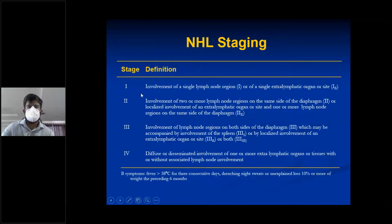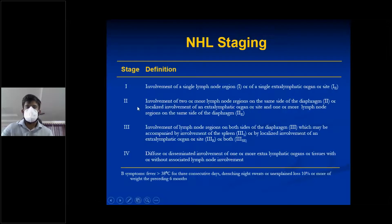NHL staging is the same as for Hodgkin's lymphoma. Stage 1 is involvement of a single lymph node region or an extra-lymphatic site. Stage 2 is involvement of two or more lymph node regions on the same side of the diaphragm, or one extra-lymphatic site plus one or more lymph nodes on the same side. B symptoms include fever greater than 38°C for three consecutive days, drenching night sweats, or unexplained weight loss in the preceding six months.